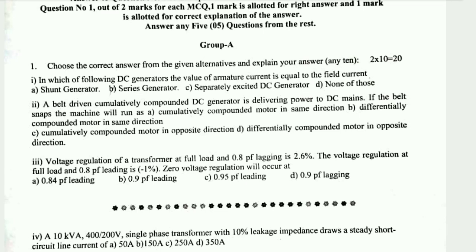Question 3: The voltage regulation of a transformer at full load is 2.6% at 0.8 power factor lagging, and minus 1% at 0.8 power factor leading. Zero voltage regulation will occur at 0.95 power factor leading.